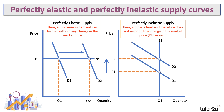The alternative extreme is perfectly inelastic supply, where supply is fixed in a given time period and does not respond to a change in the market price. In this situation, as demand goes up from D1 to D2, output stays exactly the same at Q1 — all that happens is the market equilibrium price rises from P1 to P2.